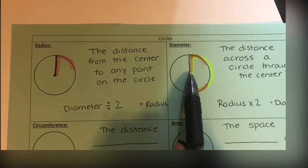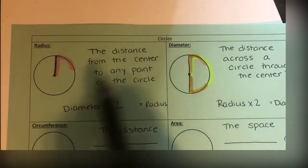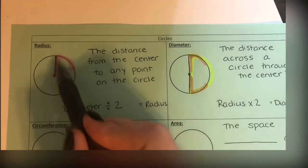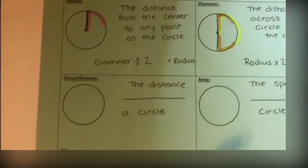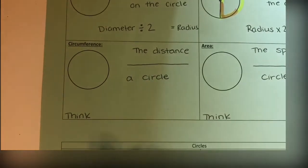Radius is half, diameter is the whole distance across the circle. Now, what we're going to be calculating is circumference and area. Let's talk about this word circumference. Circumference is the distance around a circle.